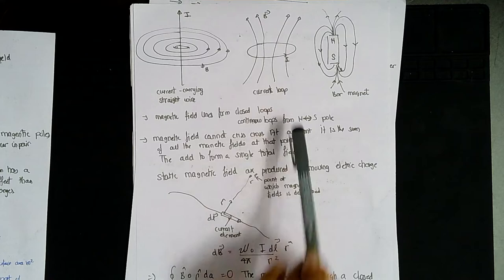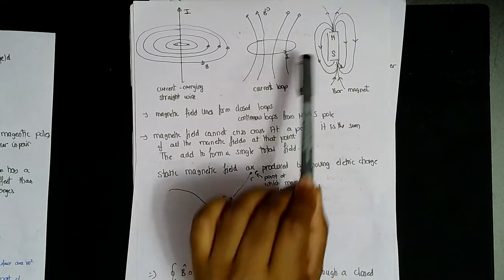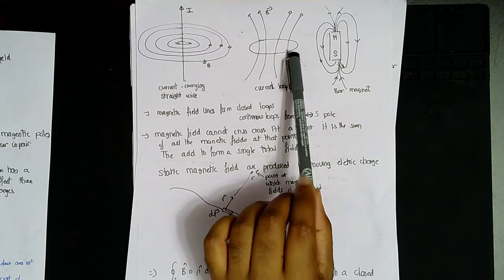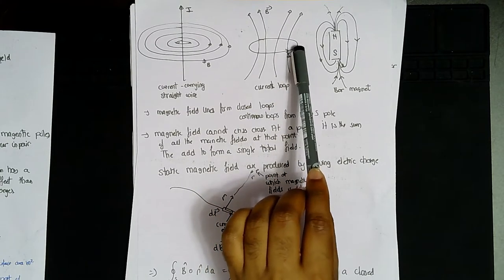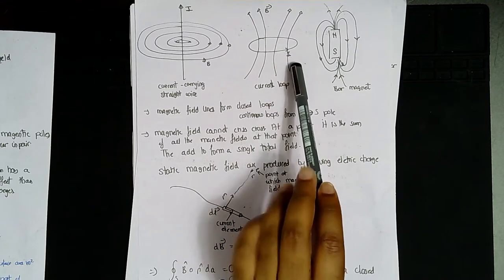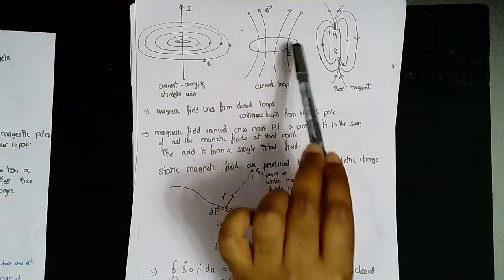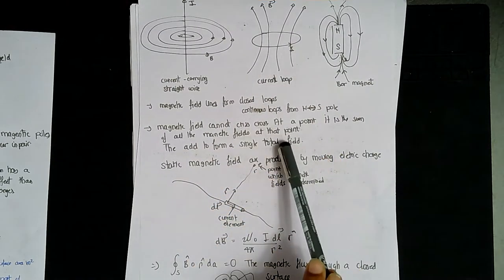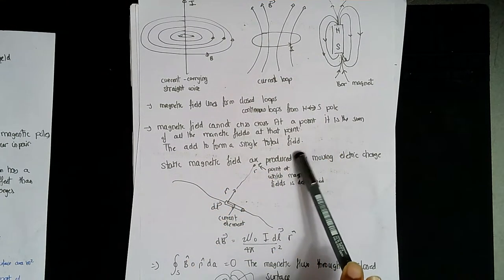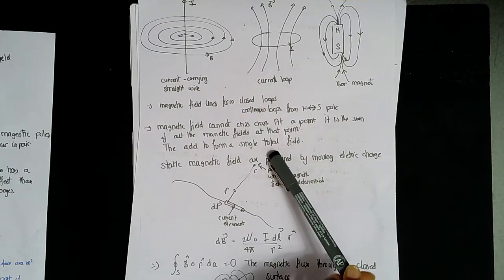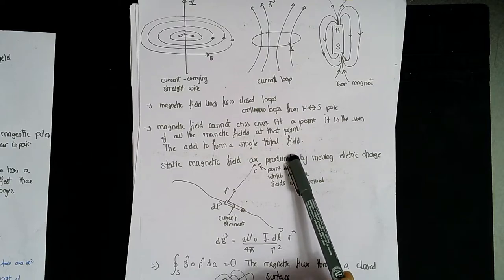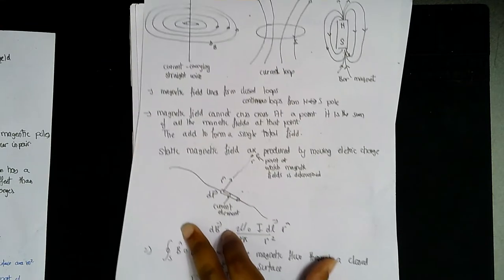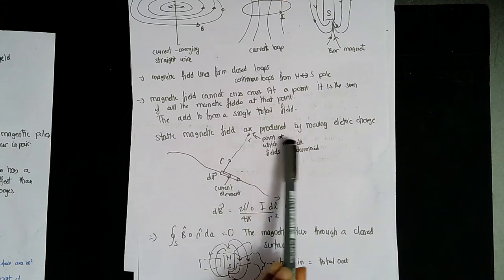Magnetic field lines form closed loops, generally going from north to south outside the magnet. Magnetic fields cannot crisscross at any point; if two magnets' fields appear to crisscross, the cumulative force acts at that instance and you simply find the total field by summing the contributions. Static magnetic fields are produced by moving electric charge — that is, by electric current.